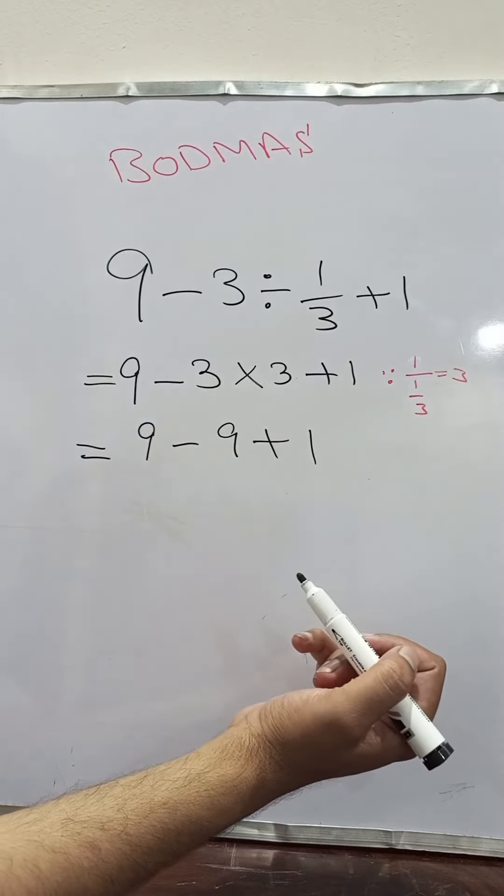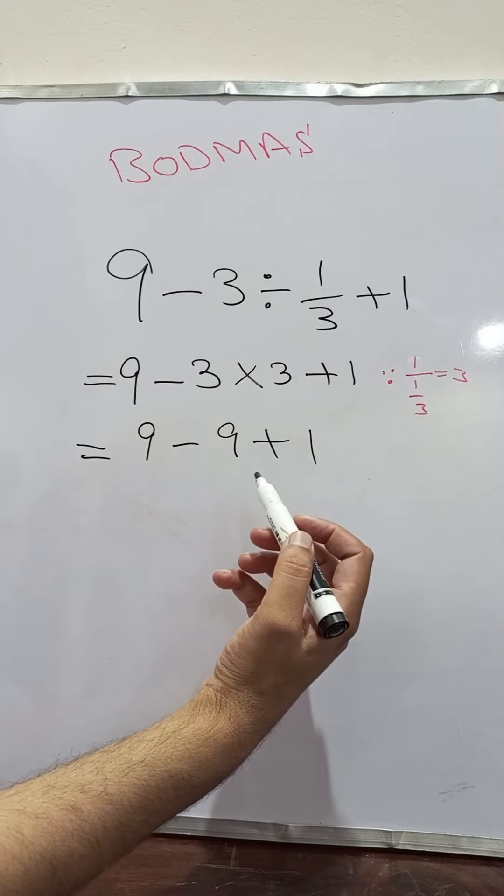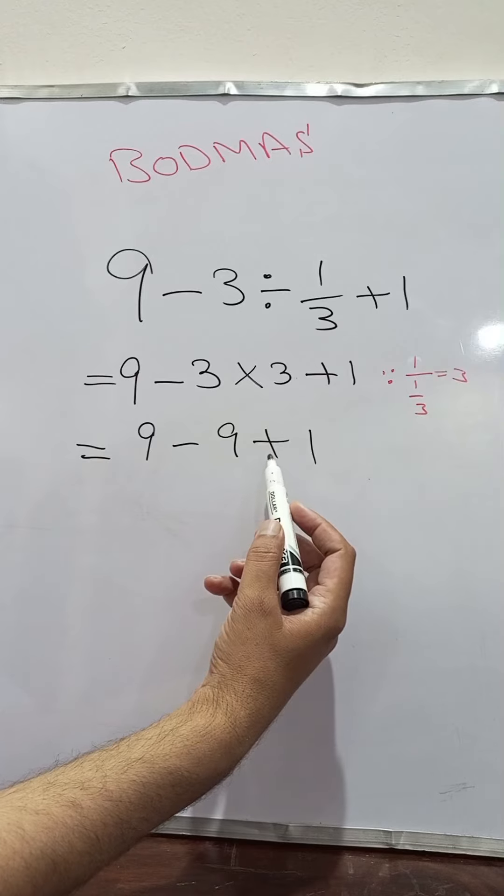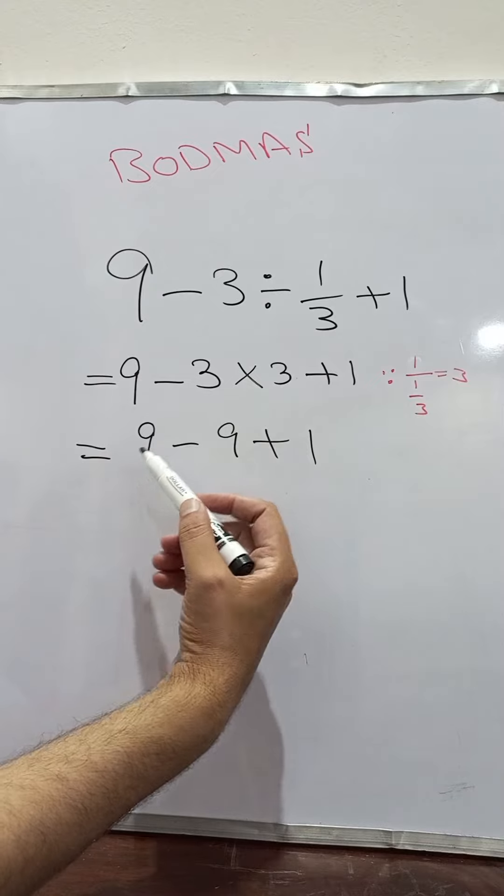Now, I have plus 9, minus 9 and plus 1. So, either I am going to add plus 9 and plus 1 to get 10 and then subtract minus 9 from it.